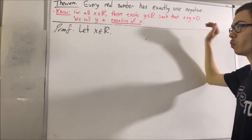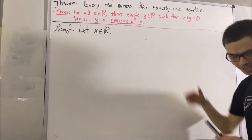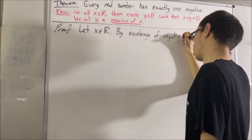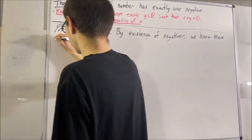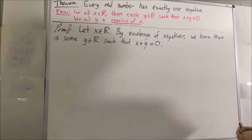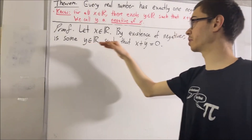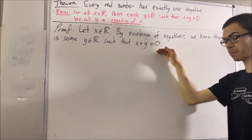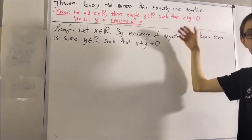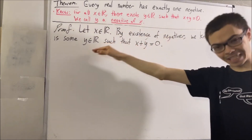Well, we know that there is a real number y that satisfies this condition. But we want to show that y is the only real number that satisfies this condition. And to do that, we want to show that every real number that satisfies this condition is equal to y.